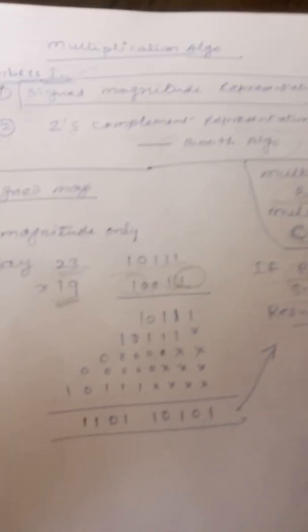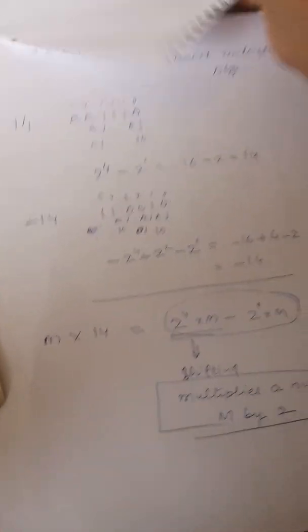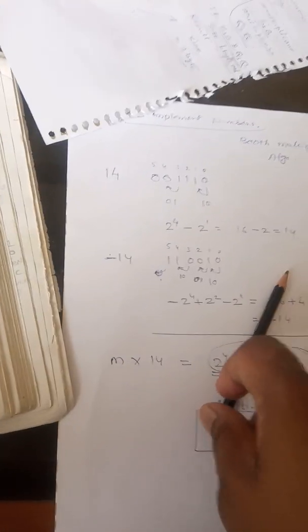Booth algorithm is another algorithm which is used to multiply 2's complement representation numbers. So how the Booth algorithm works, I will take in the subsequent video. This is what I will try to do. Thank you.